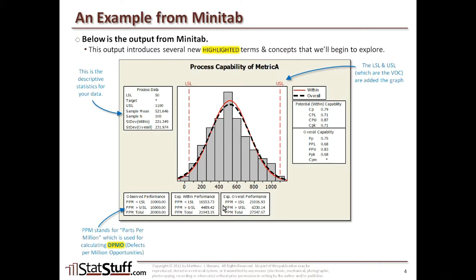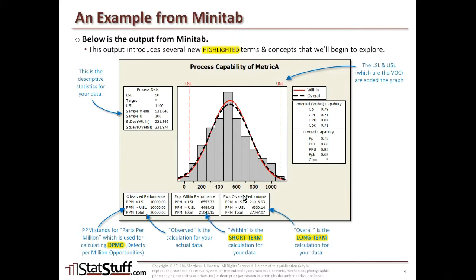Down at the bottom, there are three different boxes related to each other. PPM noted in each box refers to parts per million — this is what we'll use for calculating the DPMO, or defects per million opportunities. The first box shows observed performance, which is the calculation used on our actual data set. The next portion, labeled 'within,' refers to the short-term calculation. The box labeled 'overall' refers to the long-term calculation. Over on the far right-hand side, we look for key terms like CPK and PPK, which are the critical metrics for measuring process capability.